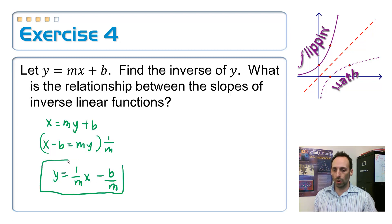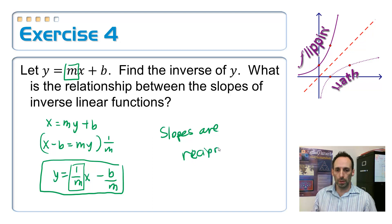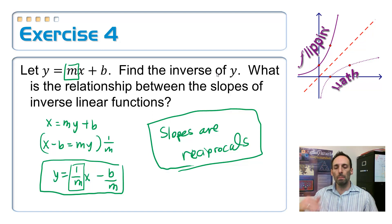So here is our inverse of that original y equals mx plus b equation. Look at the original slope is m, and the new slope is 1 over m. What's the relationship? Slopes are reciprocals. And perhaps that makes sense to you because if I'm multiplying by 2, in order to undo it, I have to multiply by a half. I have to basically multiply by the reciprocal. And that's exactly what's happening with those.